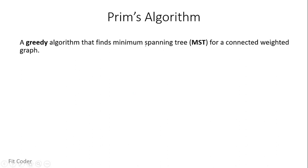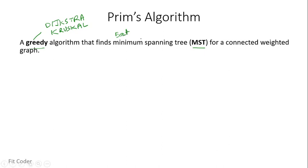Prim's algorithm is a greedy algorithm that finds the minimum spanning tree for a connected weighted graph. There are two key terms here: greedy and MST. We have studied two greedy algorithms before — Dijkstra's algorithm for shortest path and Kruskal's algorithm for minimum spanning tree. A greedy algorithm is an approach for solving a problem by selecting the best option available at the moment without worrying about the future result. At every step, we optimize and pick the best choice available — this is known as the greedy approach.